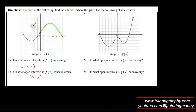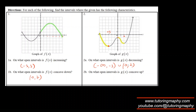Now we need to find the decreasing interval. Decreasing means with increasing values of x, y is decreasing. The function is decreasing, then increasing, then decreasing again, then increasing. Since there are arrows indicating the function continues in both directions, the decreasing intervals are from negative infinity to negative 3, union zero to 2.